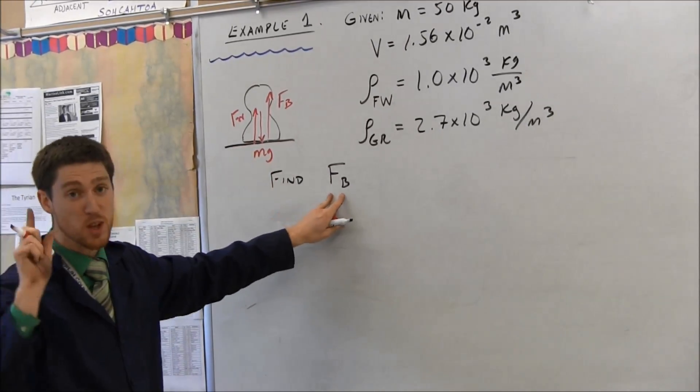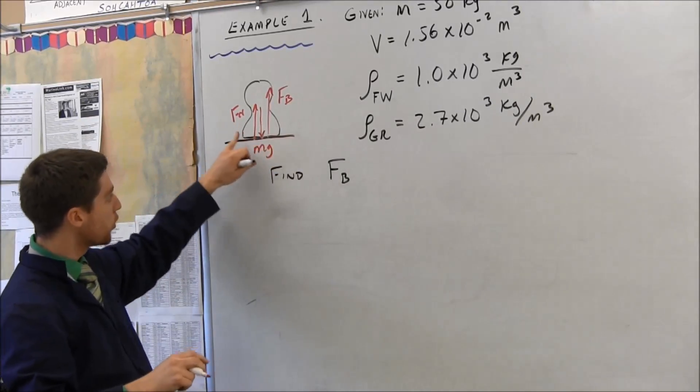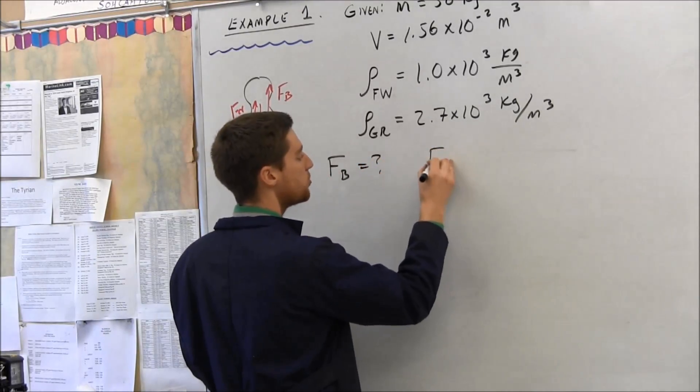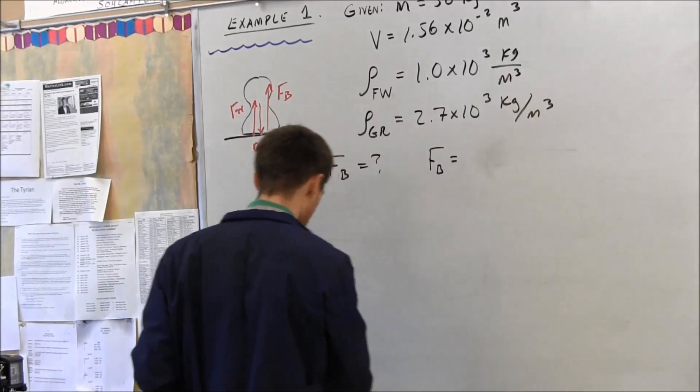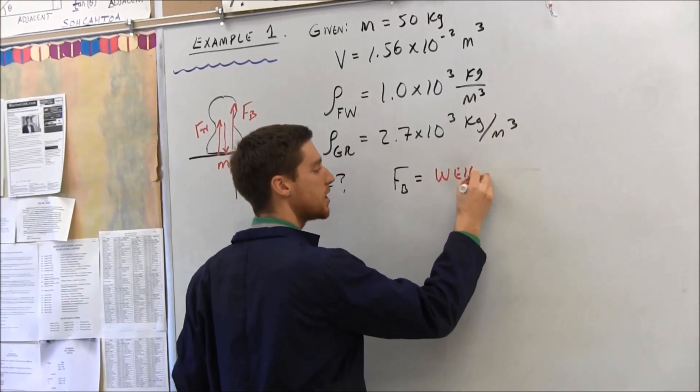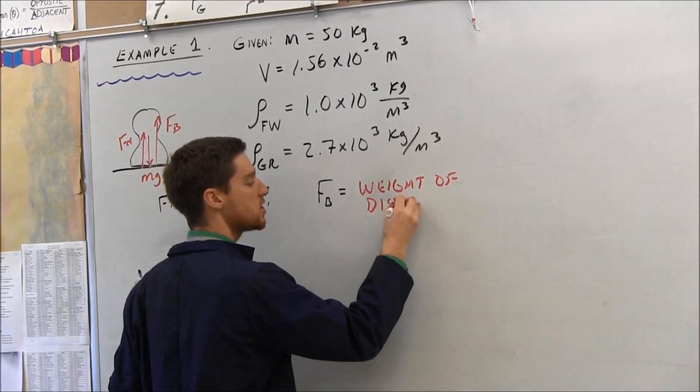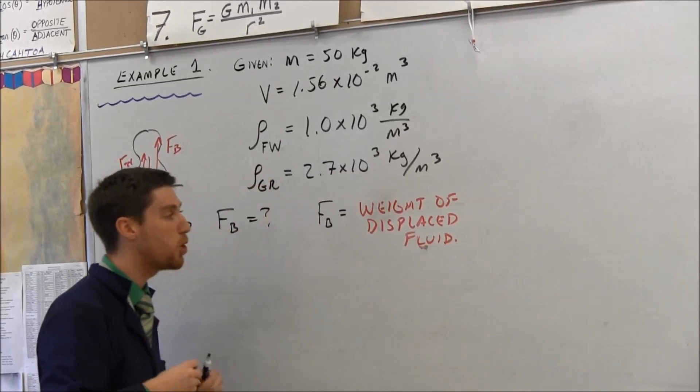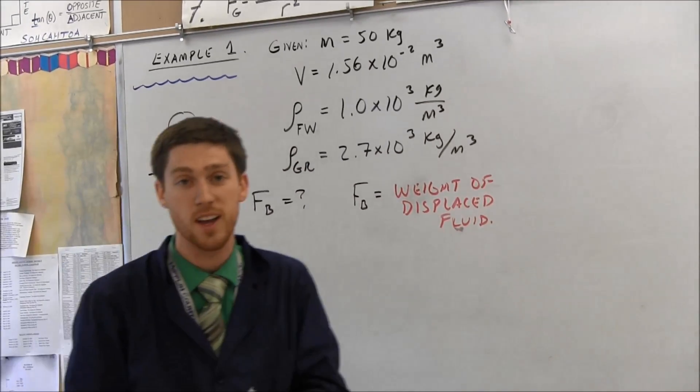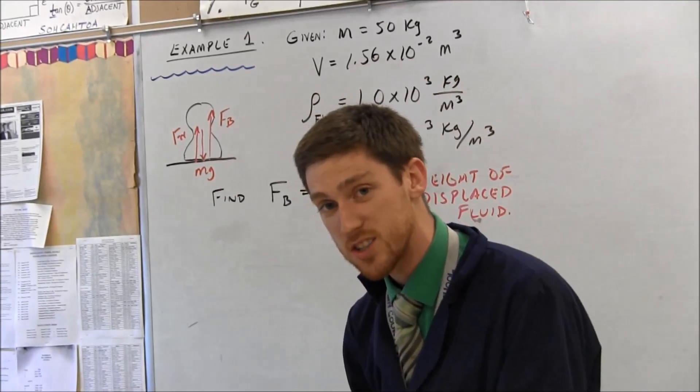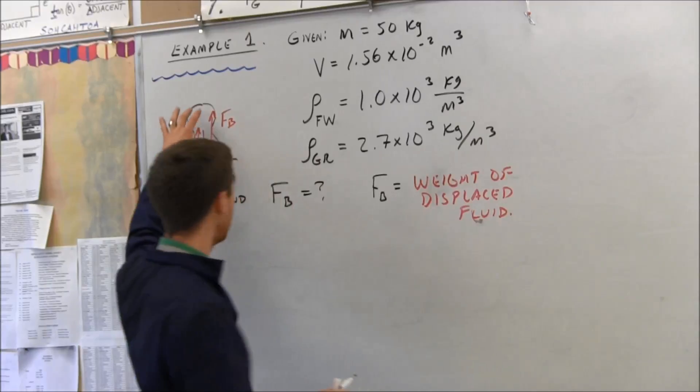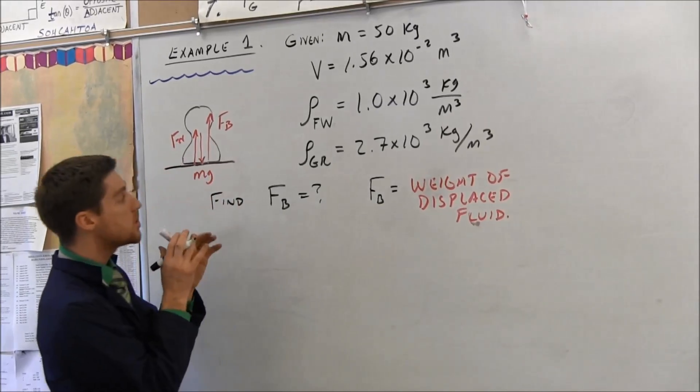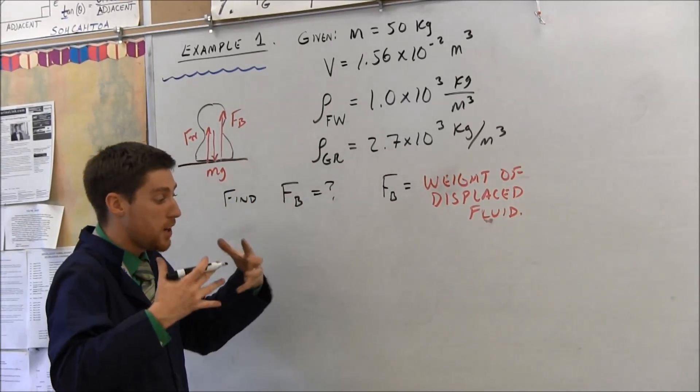In this case, they ask you specifically for the buoyant force. So you really aren't going to worry about normal force and mg in this particular problem. The buoyant force equals the weight of the displaced fluid. If you think about some fluid that's being displaced, that just means we're pushing it out of the way. This statue pushes water out of the way. If you take all that water and put it on a scale and calculate the weight of that water that's pushed out of the way, that's the buoyant force.